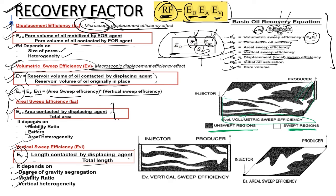This figure shows the volumetric sweep efficiency. The white region shows swept regions and the dark region shows unswept regions. Volumetric sweep efficiency equals swept region divided by the total cuboidal reservoir volume. Vertical sweep efficiency is the swept region divided by the total length of the reservoir. Aerial sweep efficiency is the swept region divided by the actual area of the reservoir. Total recovery factor is the product of displacement, aerial, and vertical sweep efficiencies.